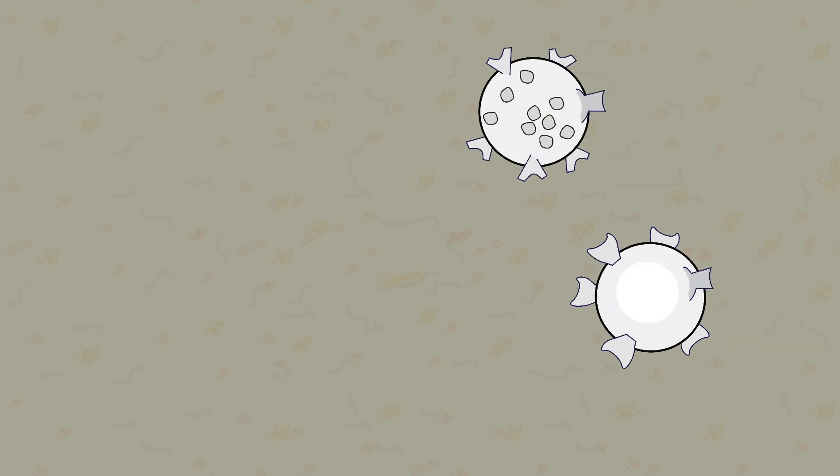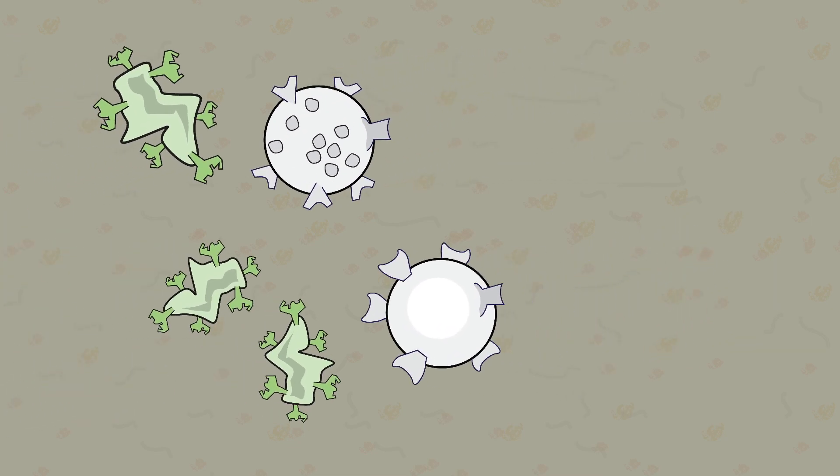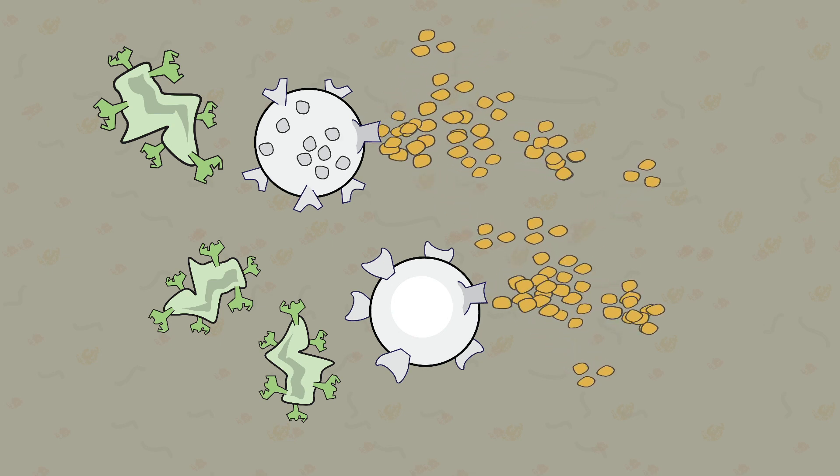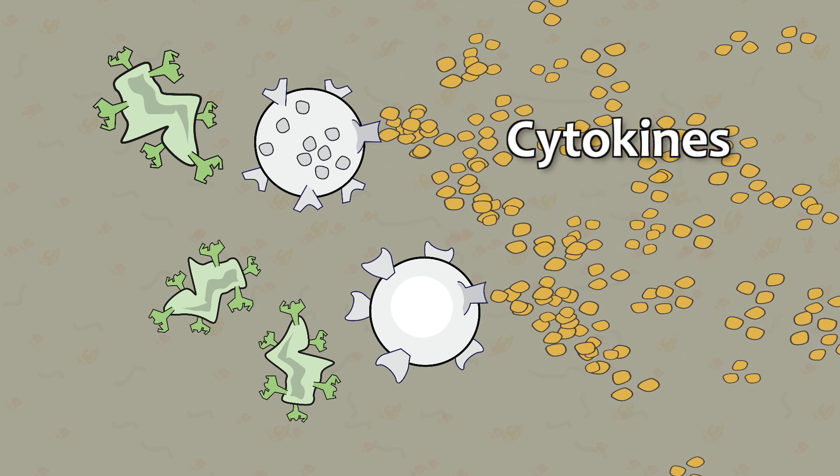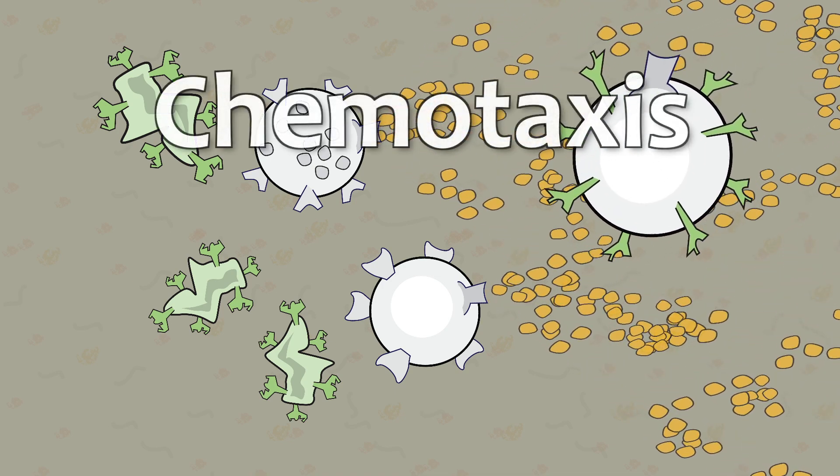Phagocytes are drawn to the infected areas by chemicals that come from either the antigen or other phagocytes already present in the area of infection. The way phagocytes move in response to chemical stimulation is known as chemotaxis.